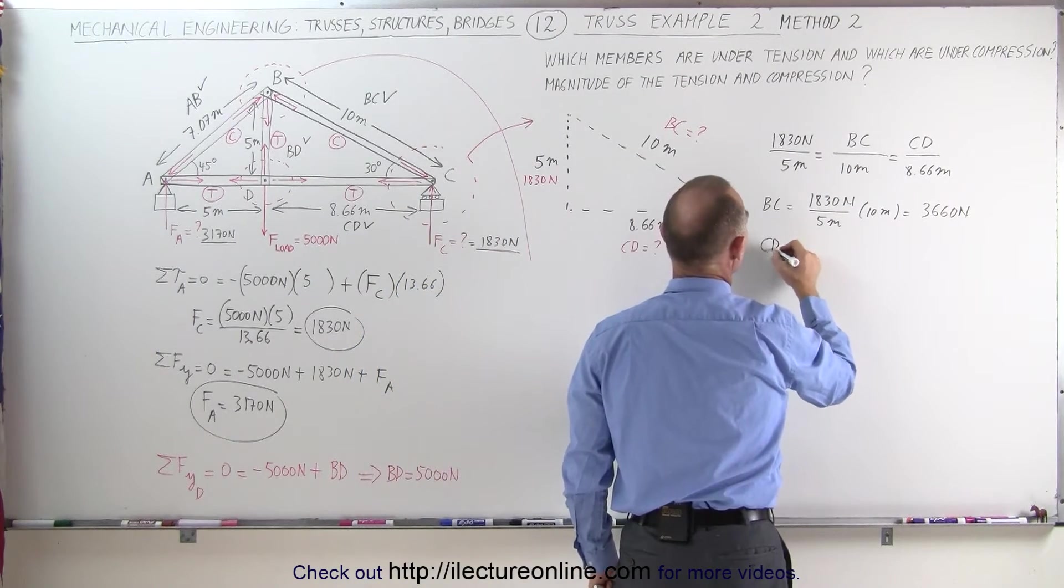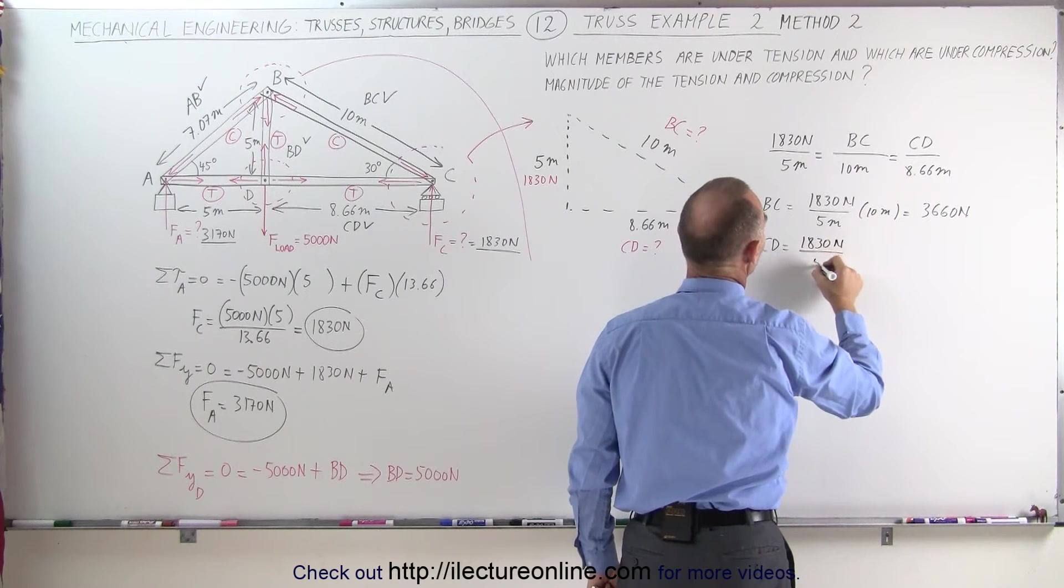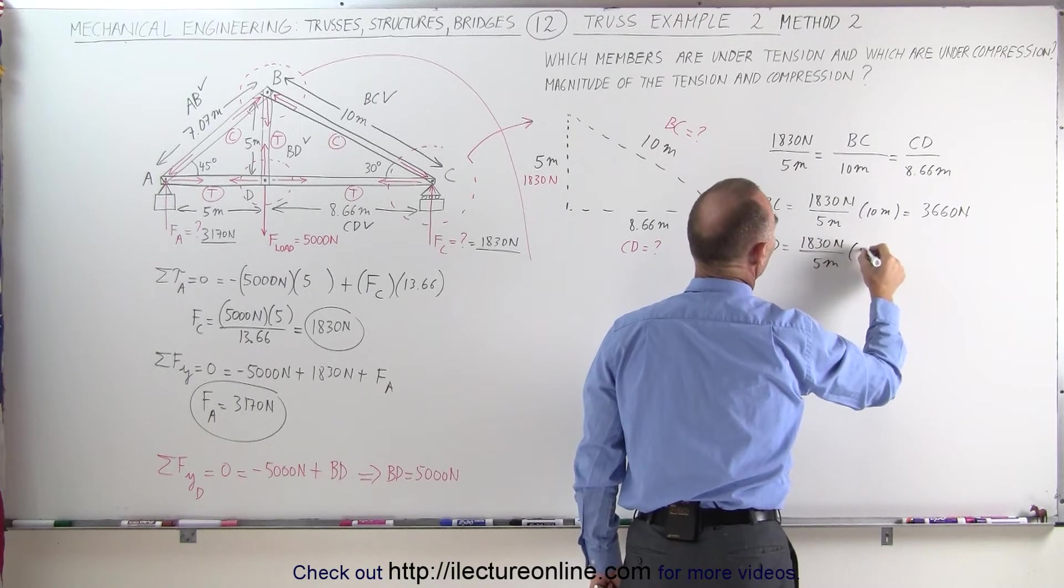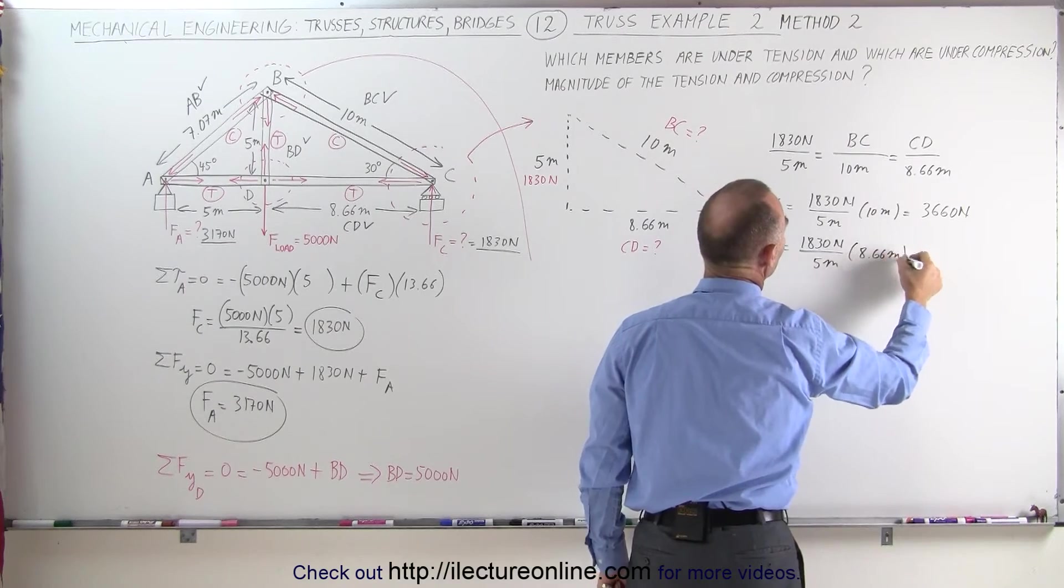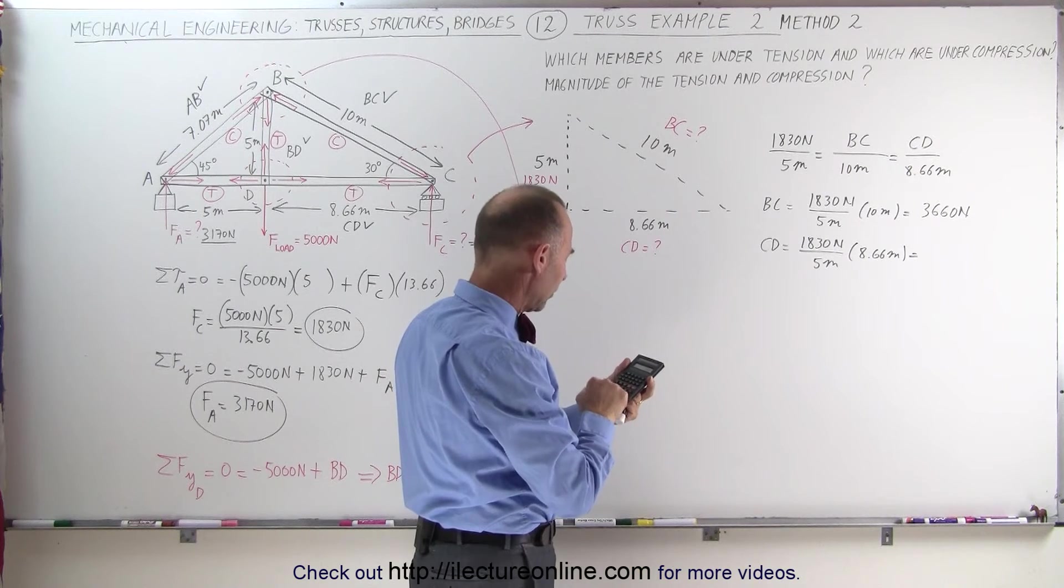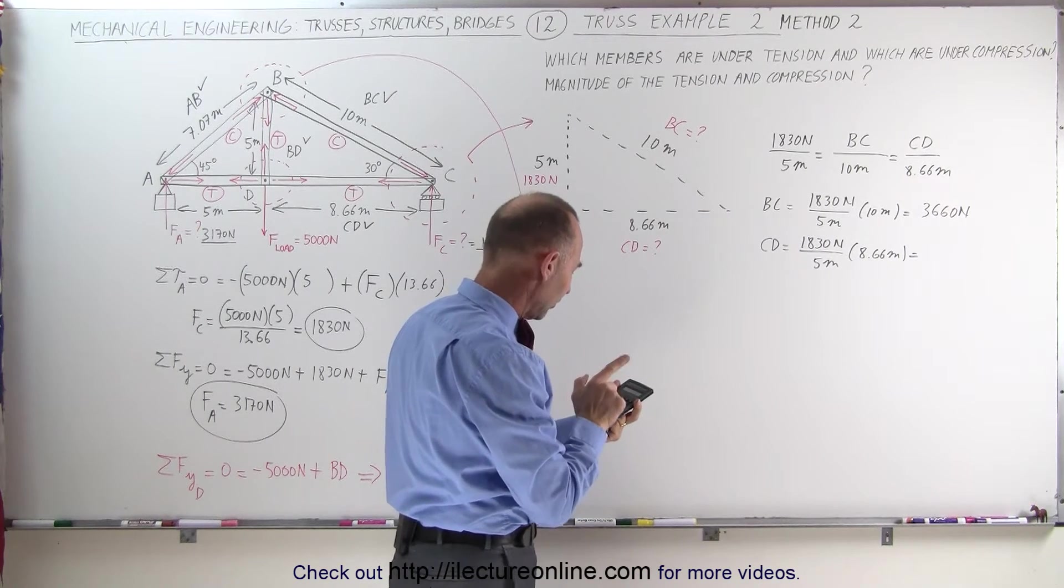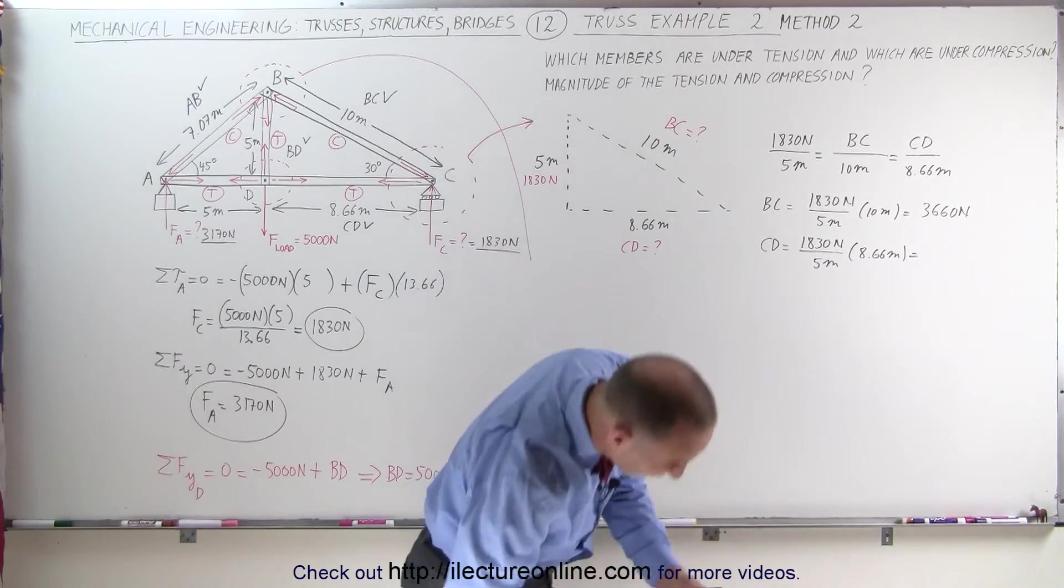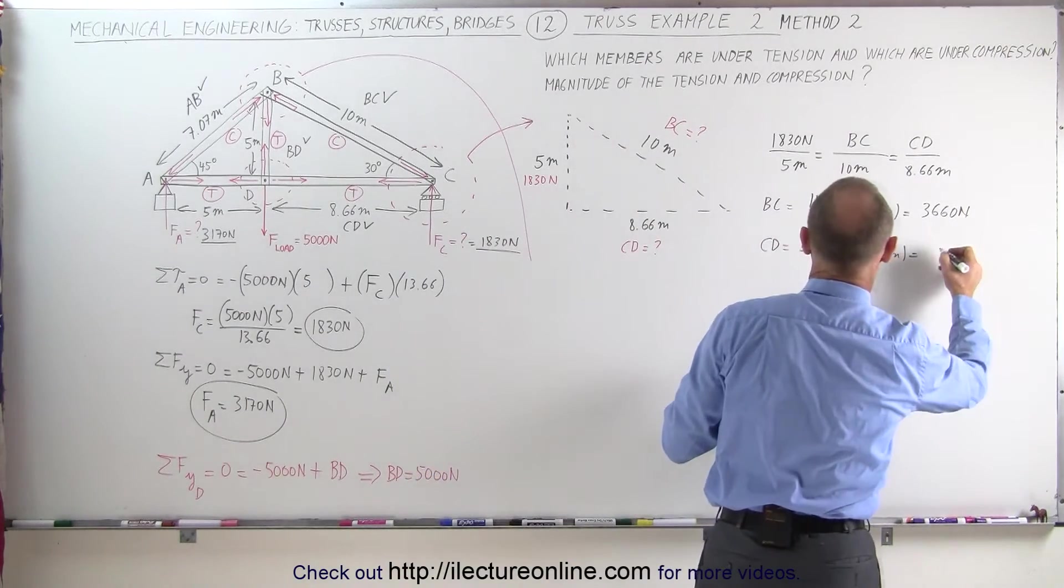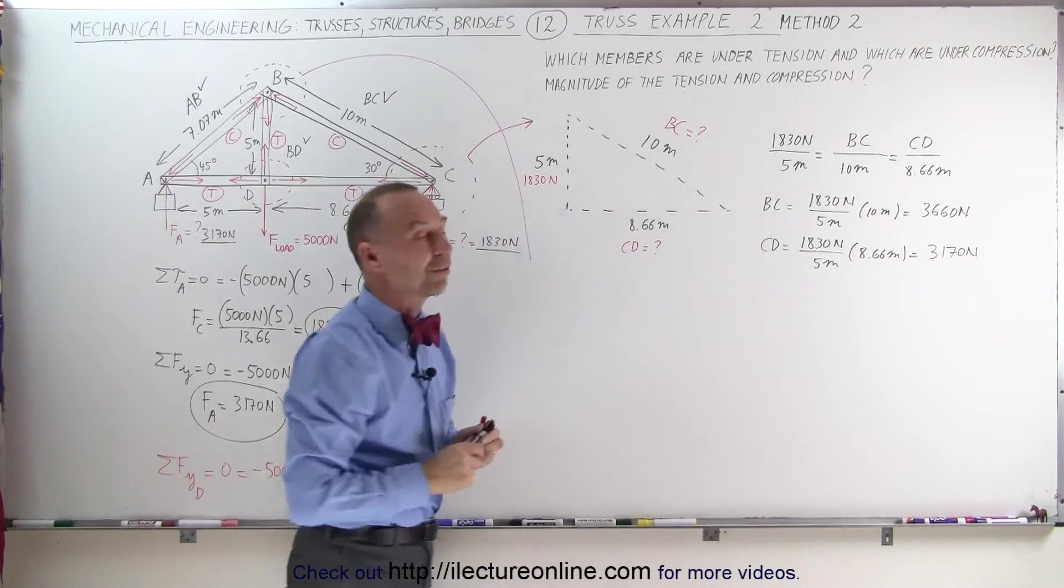And CD can be found by taking 1830 N divided by 5 meters and multiplying this times 8.66 meters. Let's see with the calculator: 1830 N divided by 5 times 8.66 equals 3170 N. And that also was the same value that we got in the previous video.